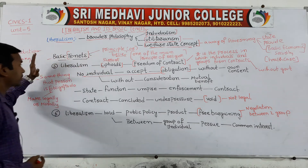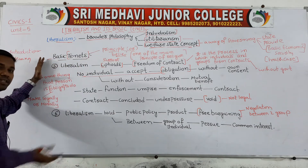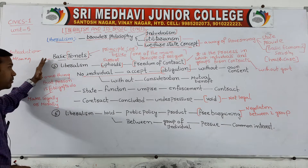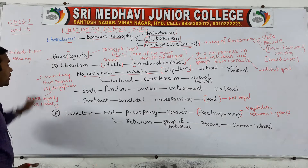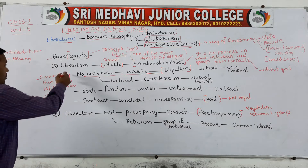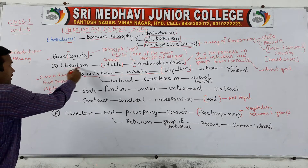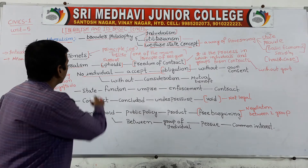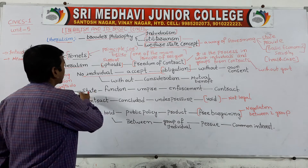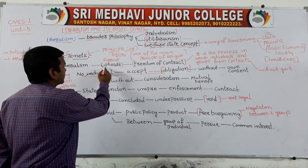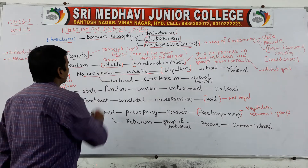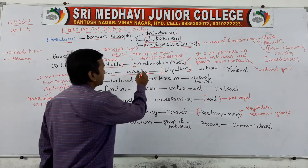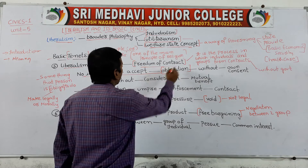Now we will go directly to the subject. In the last concept we have discussed about the fourth basic tenet. Now this is the fifth basic tenet, which is called as liberalism. So mainly liberalism is supporting the freedom of contract.